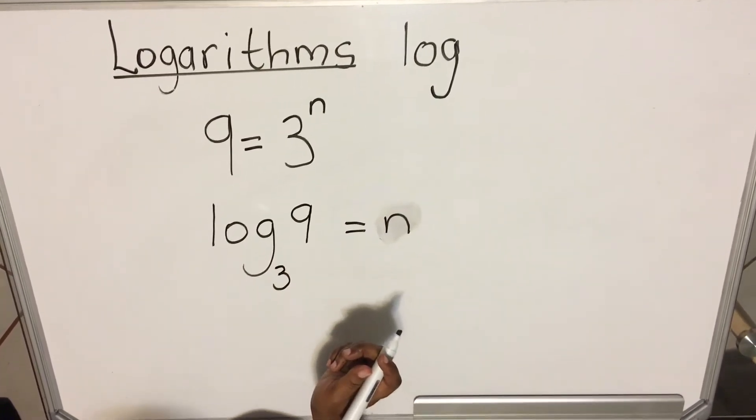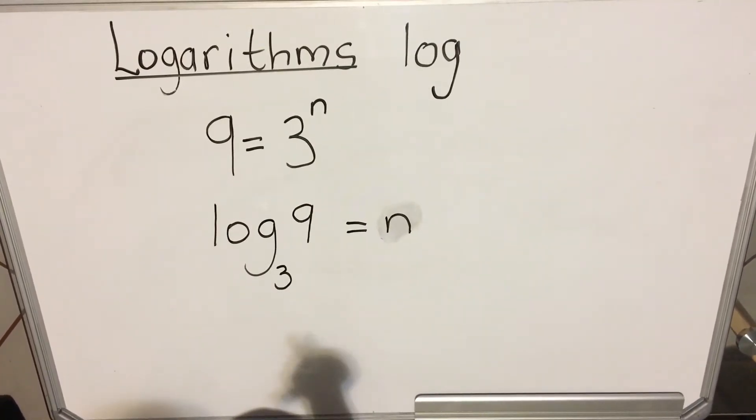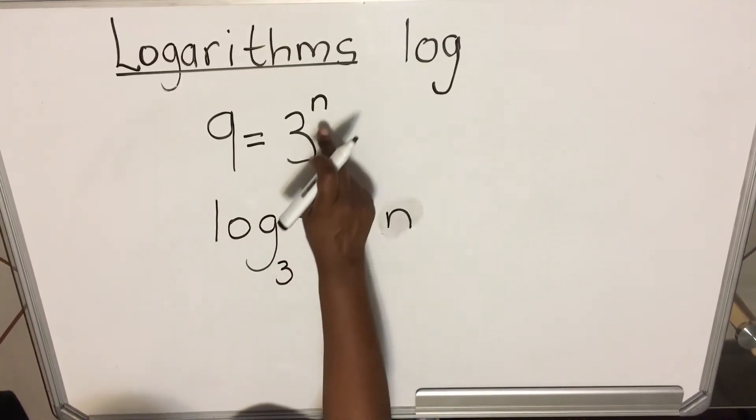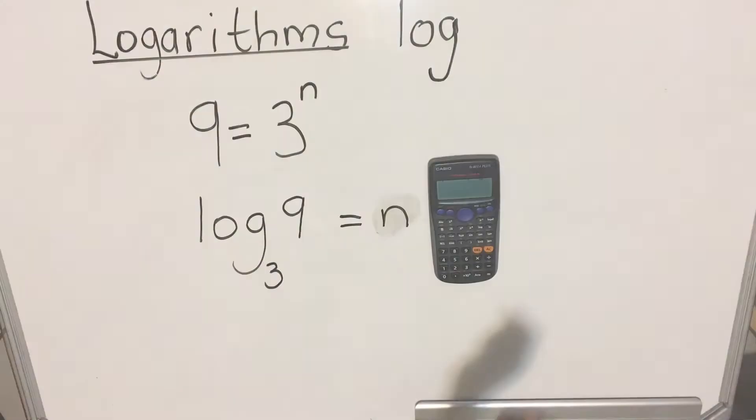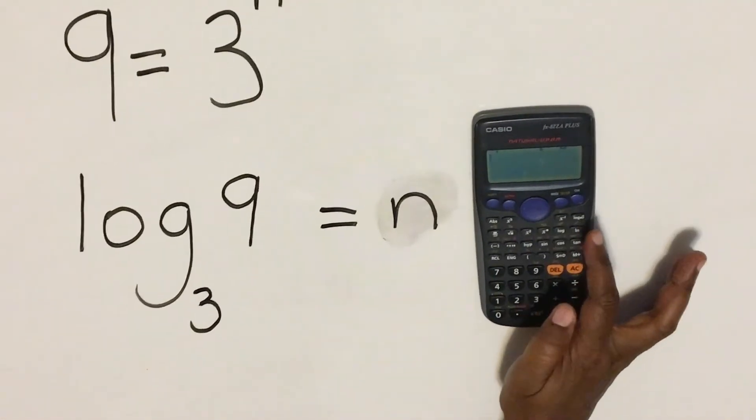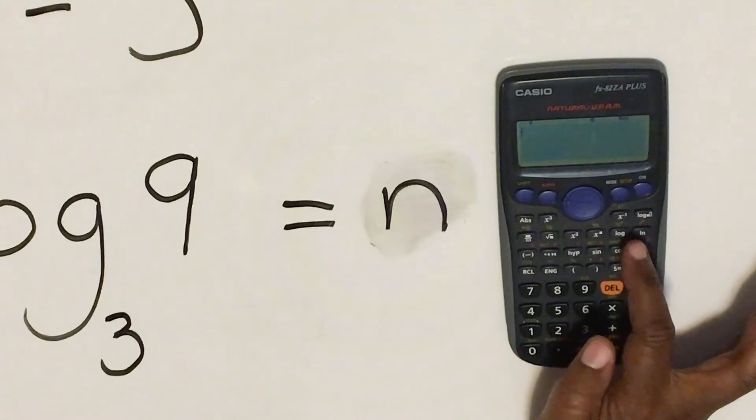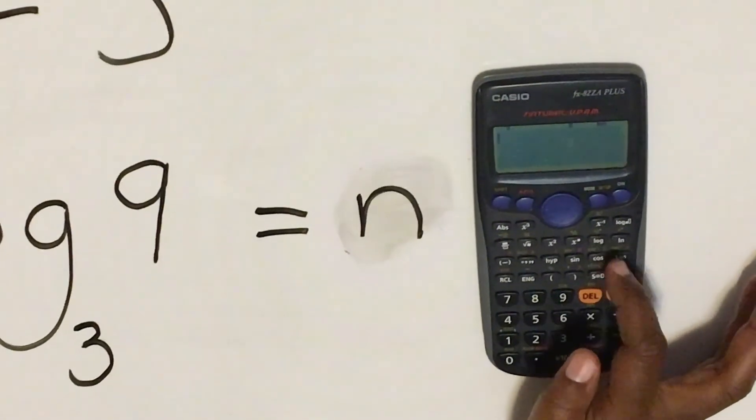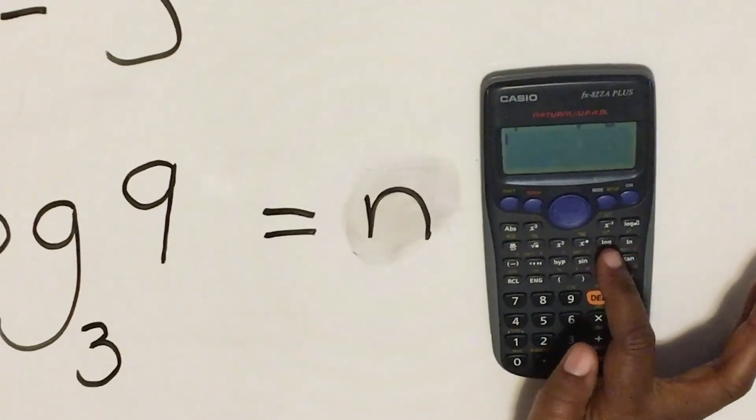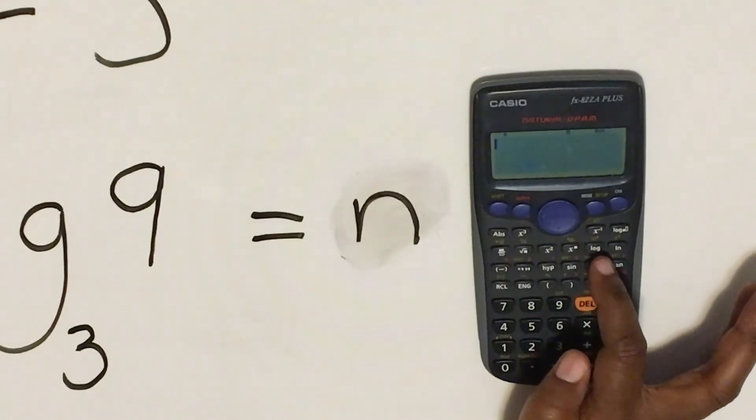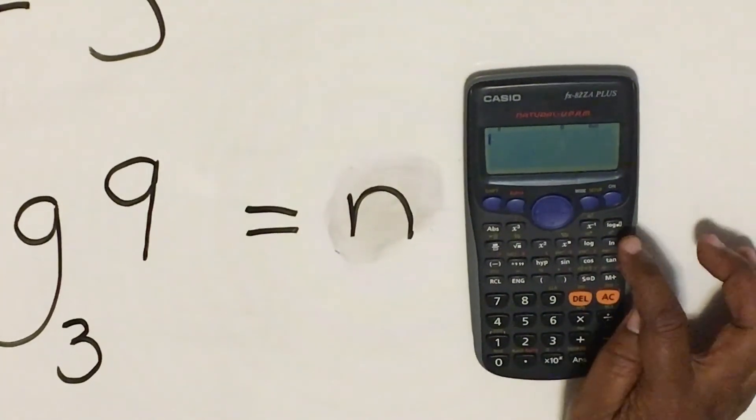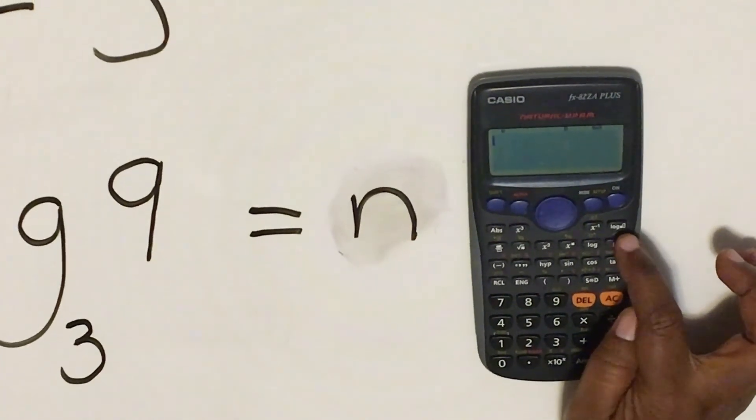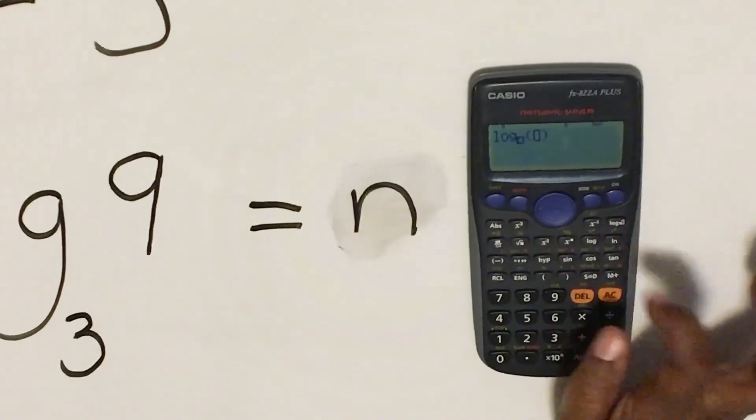Then we're going to take our calculator and see if we're going to get the 2, because we know that 3 to the power 2 is 9. When you use your calculator, there are 2 logs. There's this log that doesn't have a box or anything there. That's log to base 10. And there's this log that has a colored box there. You press that one. So that one you can put a base.